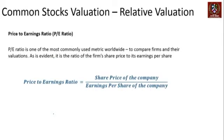The most common and widely used metric under relative valuations globally is called the Price-to-Earnings ratio, commonly referred to as the PE ratio. The PE ratio is the share price of the company divided by the earnings per share of the company. Let's first conceptually understand this, and then we will rearrange the equation to arrive at the share price.